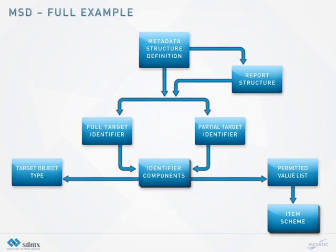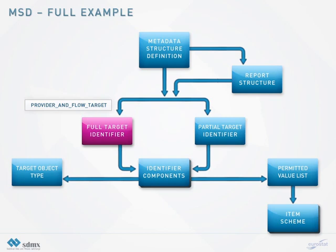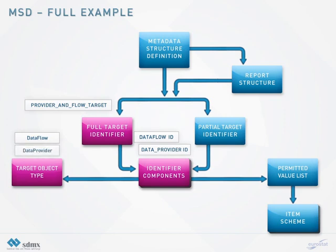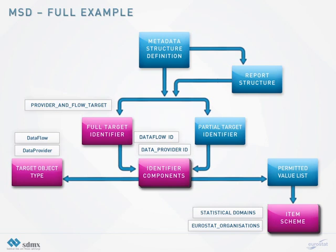This scheme provides an example on how a metadata file based on the Euro SDMX metadata structure is structured. In this example the full target identifier is named provider and flow target and will use two identifier components to identify the target object: Data flow ID, which will be associated to SDMX class data flow, and data provider ID, which will be associated to the SDMX class data provider. For the data provider identifier component an organization scheme is used for the representation. For the data flow ID identifier component a category scheme is used for representation.